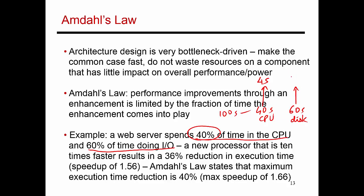The disk execution time remains unchanged — if the disk is left unchanged, it's still going to take 60 seconds. So the program is going to overall take 64 seconds to finish, which is a 36% reduction in execution time and a speedup of 1.56. Amdahl's Law states that the reduction in execution time is never going to exceed 40%, because the processor accounts for 40% of overall execution time. Similarly, if improving the disk, you cannot expect an execution time reduction of greater than 60%.